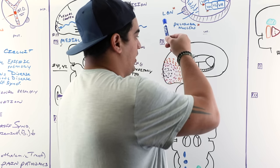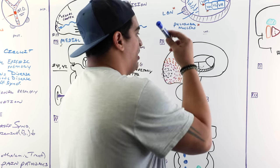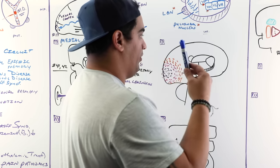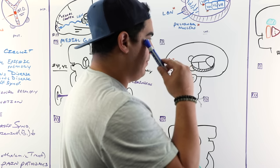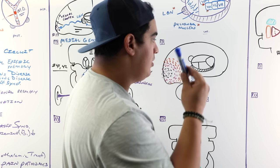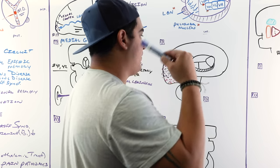So the lateral geniculate nucleus handles vision, the medial geniculate nucleus handles hearing. Lateral = light = vision; medial = music = ears = hearing.